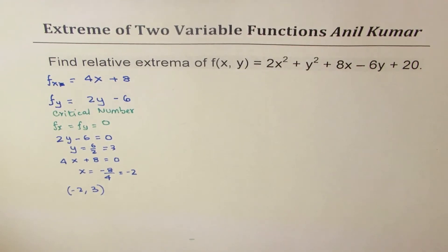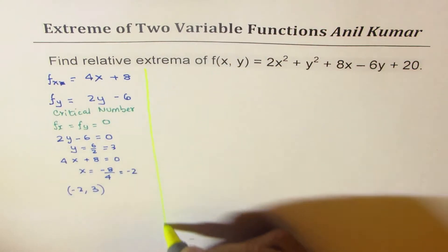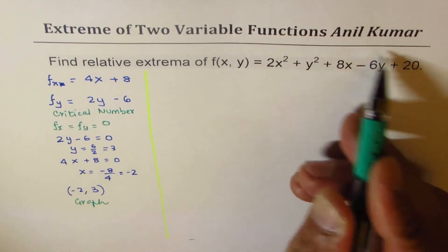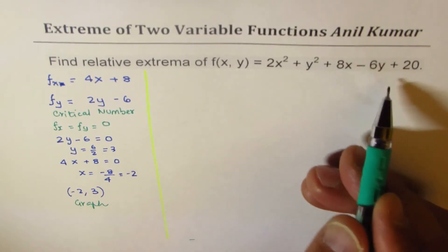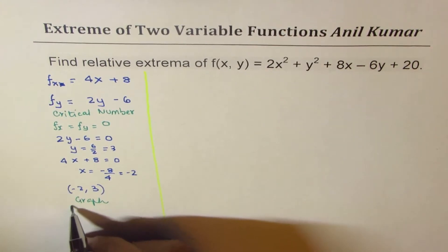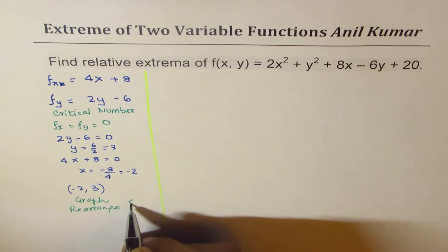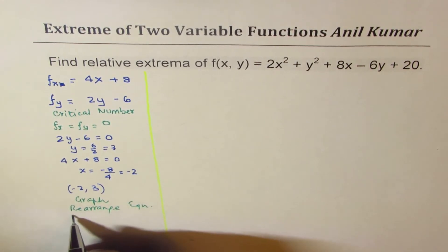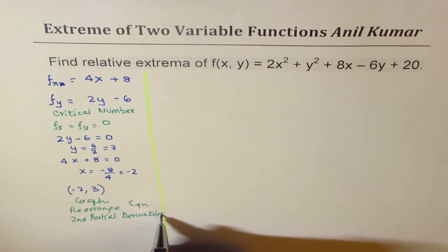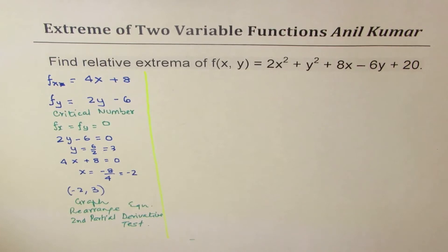Now, how do we determine whether this critical point is a maximum or a minimum? There are a couple of ways. One is to graph it — you could sketch the three-dimensional figure. You could also rearrange the equation. Or we can do a second partial derivative test. So there are actually three ways to figure it out.